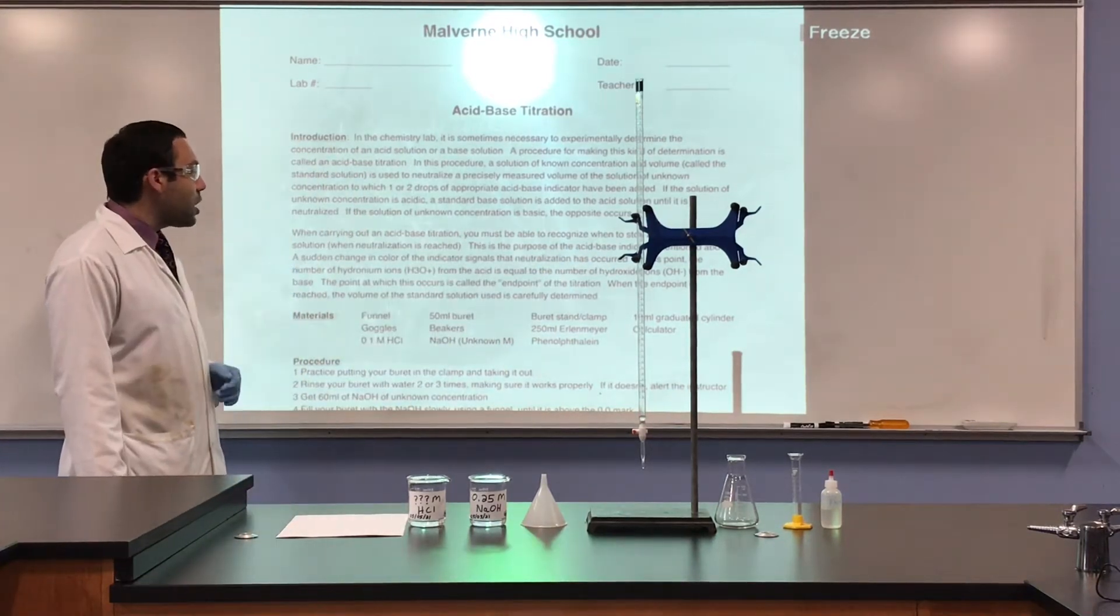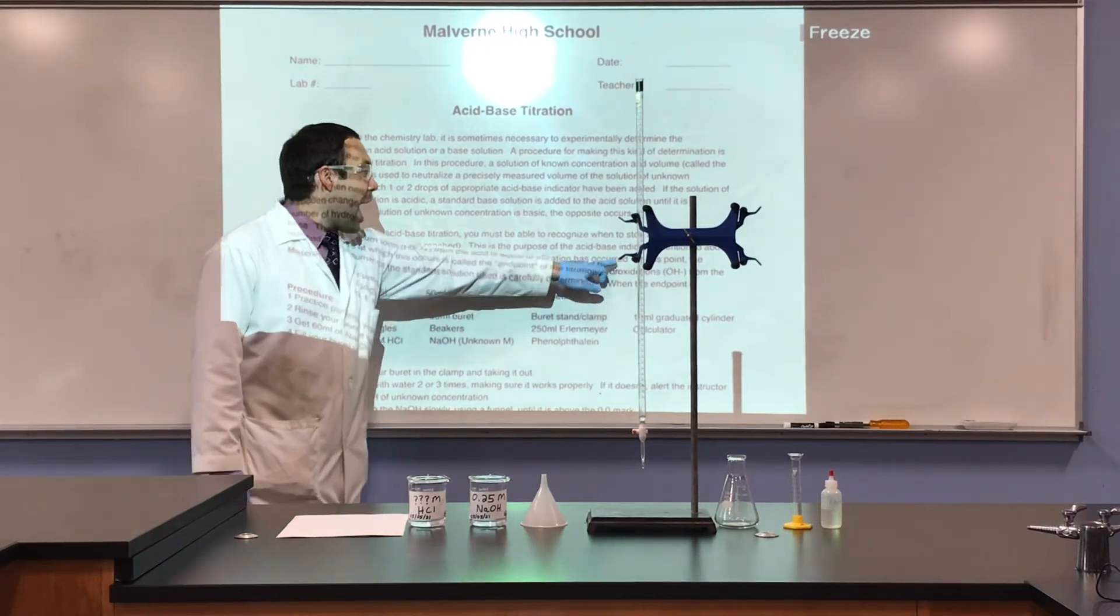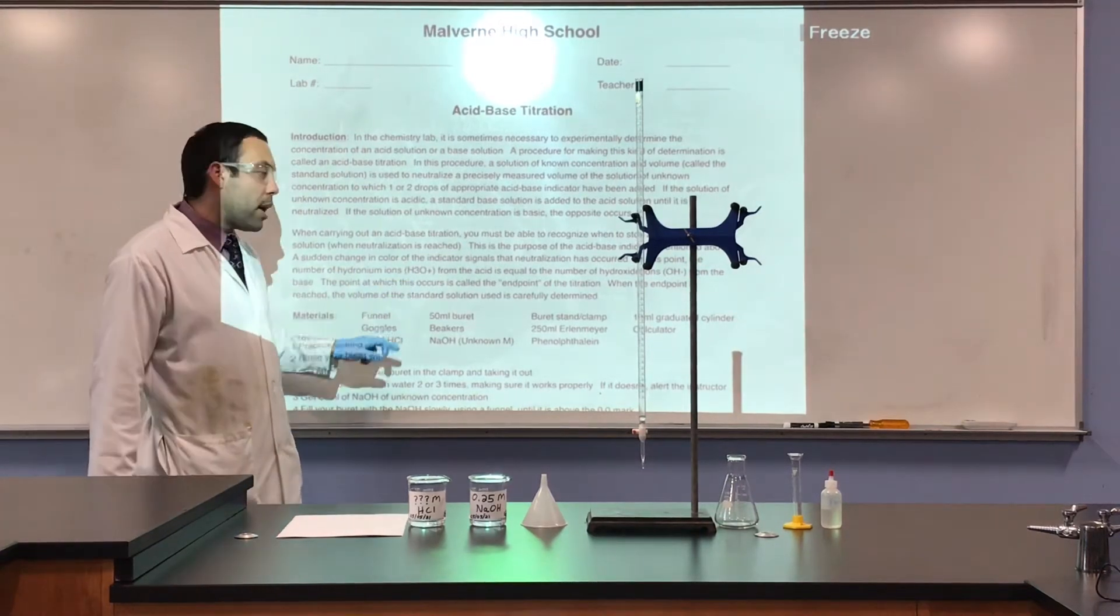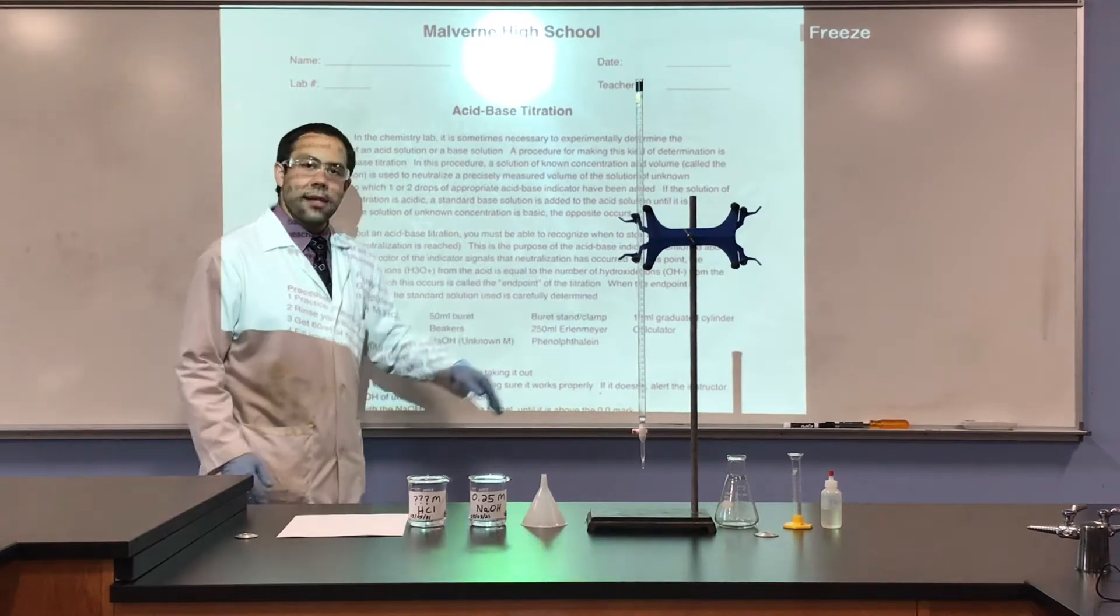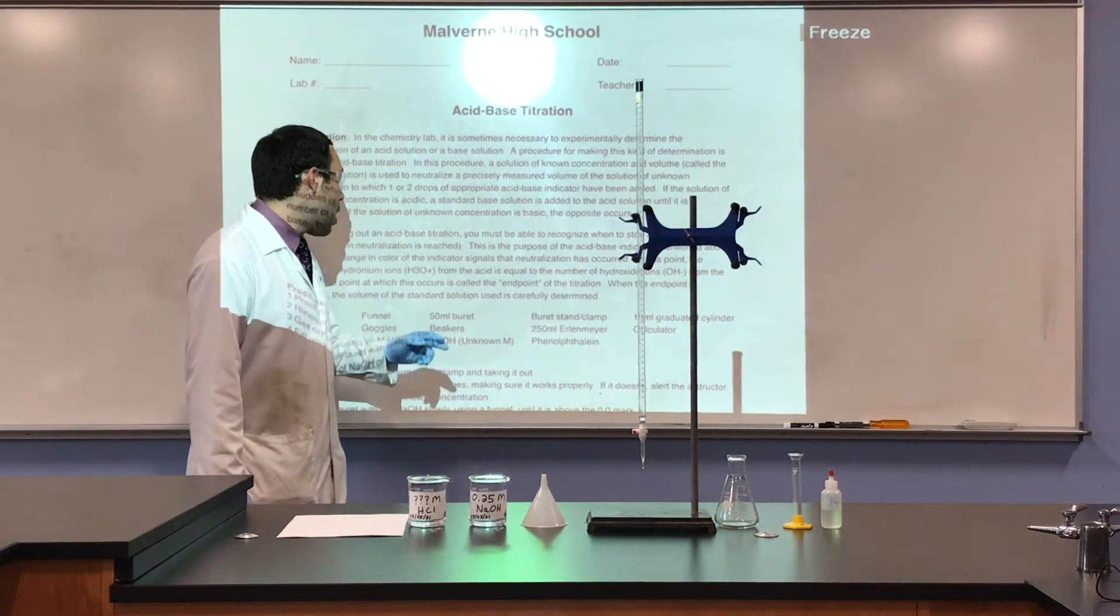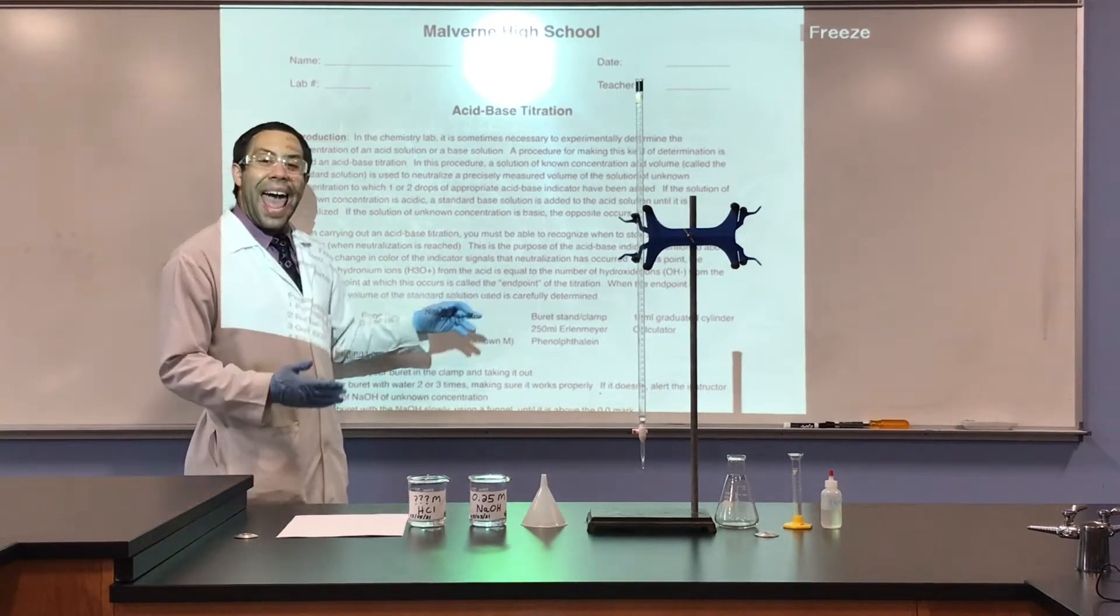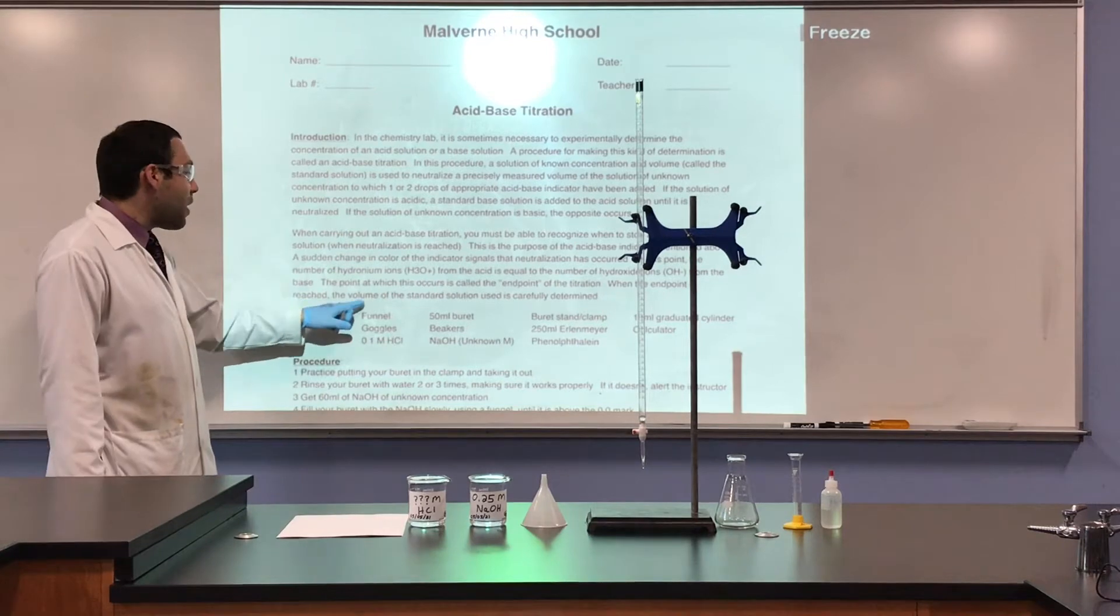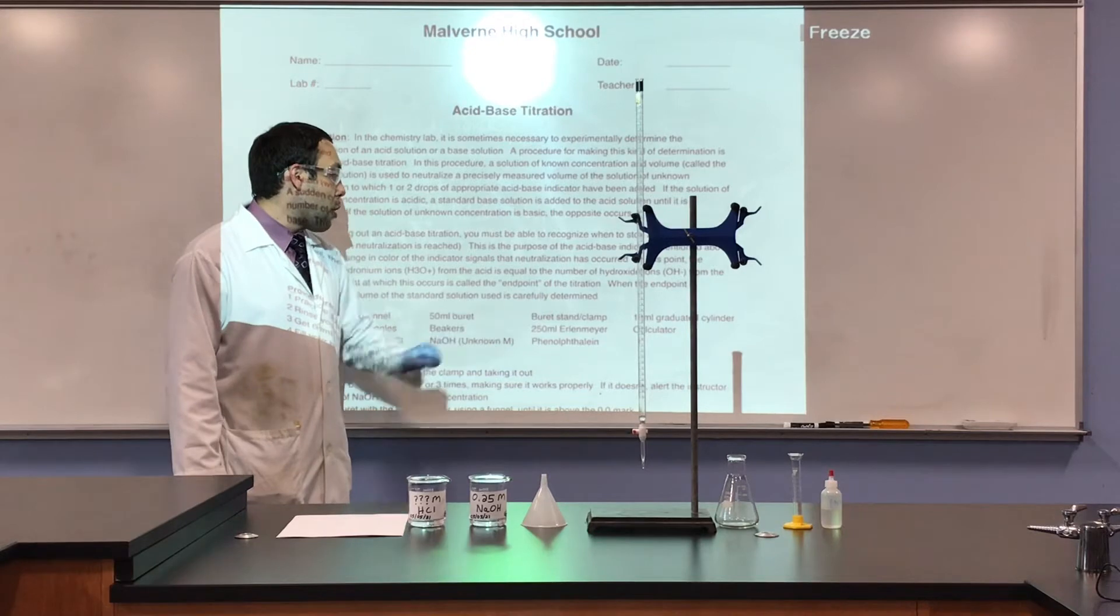This is the purpose of the acid-base indicator mentioned above. A sudden change in the color of the indicator signals that the neutralization has occurred. At this point, the number of hydronium ions, H3O+ ions, from the acid is equal to the number of hydroxide ions, OH- ions, from the base. The point at which this occurs is called the end point of titration. When the end point is reached, the volume of the standard solution used is carefully determined.